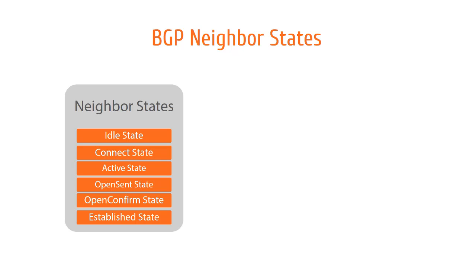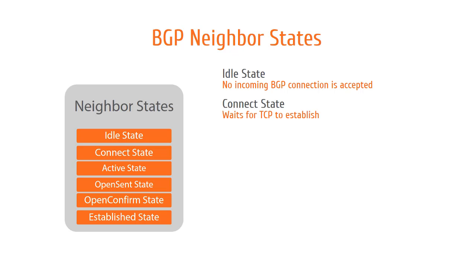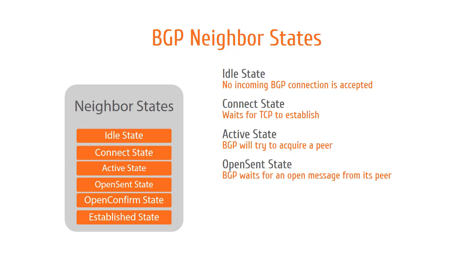There are six BGP neighbor states. First, we have the idle state — no incoming BGP connection is accepted at this time and the client will prepare for a TCP connection. Then we have the connection state, which waits for TCP to establish. If it succeeds, the local system sends an open message and transitions to the open sent state. If the transport protocol connection fails, the local system restarts the connection retry timer and changes its state to active. The active state: BGP will try to acquire a peer by initiating a transport protocol connection. The open sent state: BGP waits for an open message from its peer. Once received, it is checked and verified to ensure that no errors exist. If an error is detected, the system transitions back to an idle state.